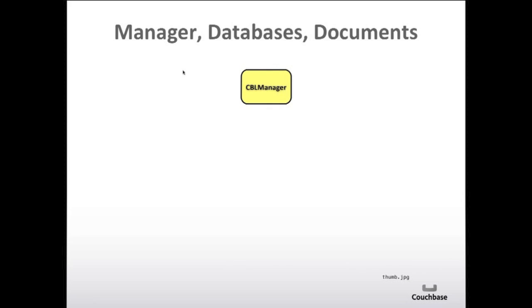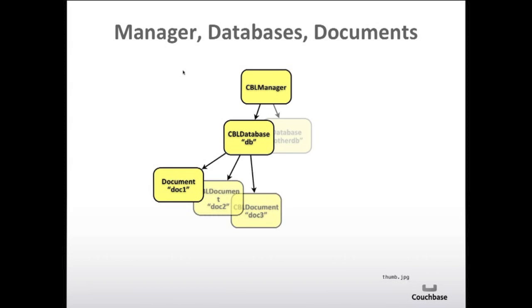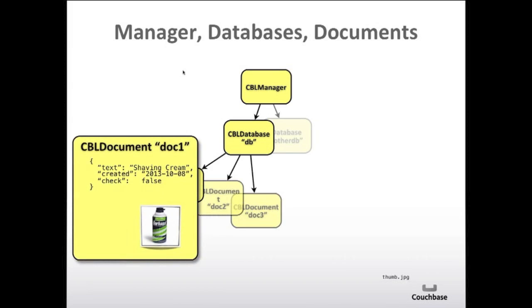Let's talk about what the CBLManager is and how it relates to the whole architecture. You can think of the CBLManager as kind of a singleton — it's your entry point into the API. A CBLManager holds a collection of CBL databases, and each database holds a collection of documents. This is what an individual document looks like, and this is exactly what we saw in the Sync Gateway output. You've got a list of fields — this can be arbitrarily nested. You can also have attachments, such as an image attachment associated with a record.